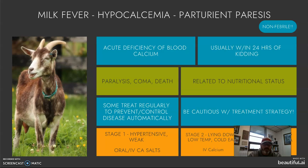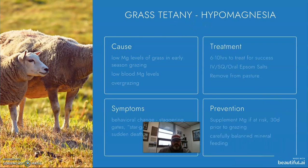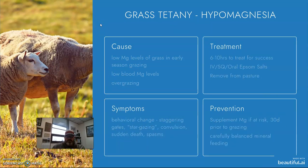Hypocalcemia is not super common in sheep and goats, but it can happen, so you want to be aware of how to identify and treat it. Because we spend a lot of time with sheep and goats on pasture, we also need to discuss grass tetany or hypomagnesemia. This is where you'll have low magnesium levels associated with low soil magnesium content in the grass, especially in early-season grazing. It can also be associated with overgrazing where the pasture is grazed completely down.